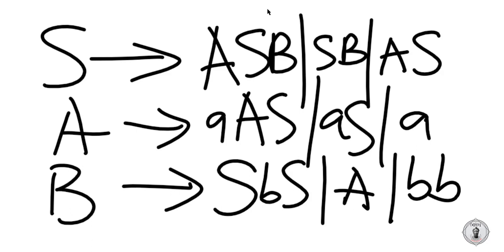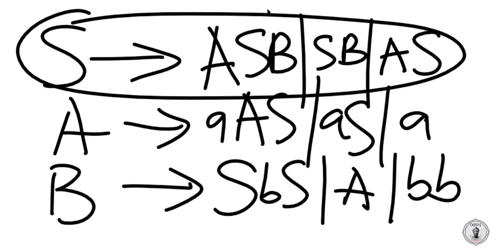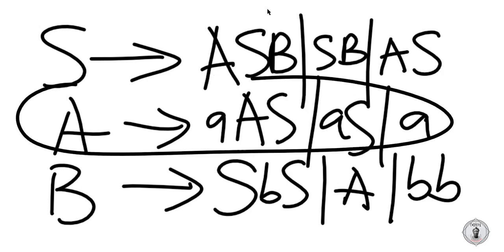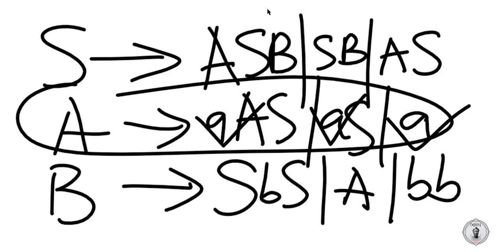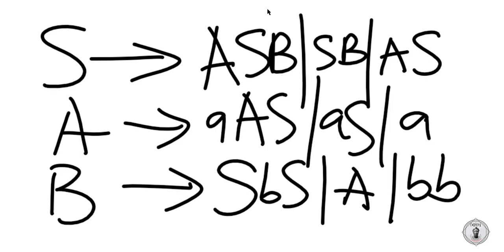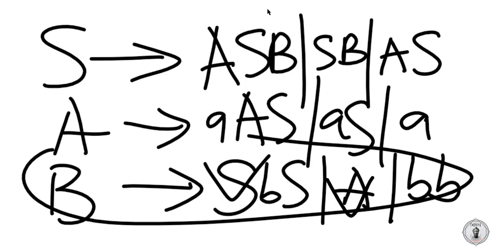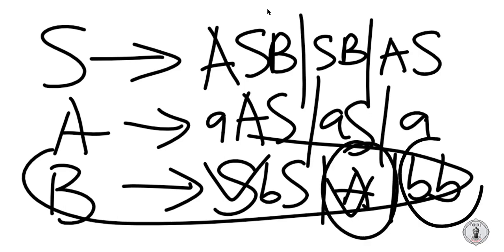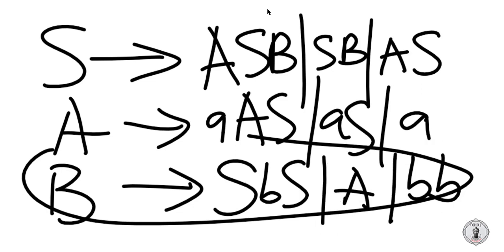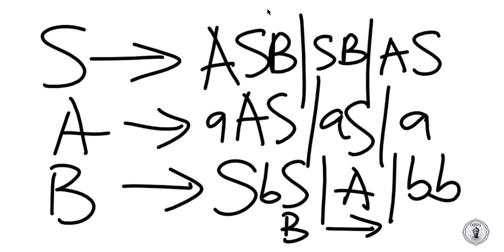My first assignment is to identify the unit pairs in the grammar. If there are no pairs, then I'm good to go — no unit productions means I can proceed to Chomsky normal form. Let's check each production: does S produce any units? Check here, check here, check here — no units. Does A contain units? Check here, check here — no units. Note: a terminal variable does not count as a unit. Now for B — does it produce a unit? Yes, B produces A, and A is alone, so B can produce A. That is our unit production.